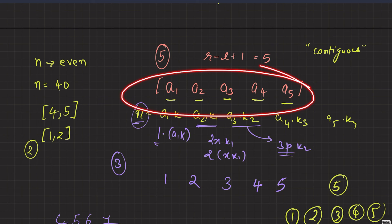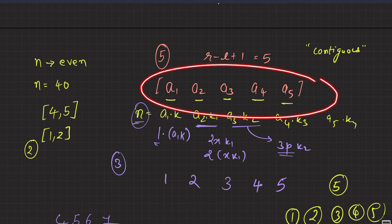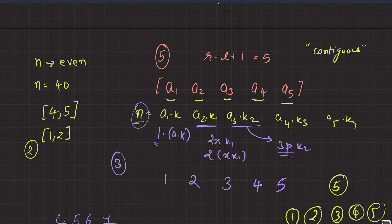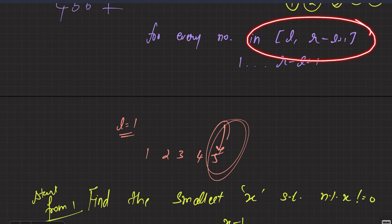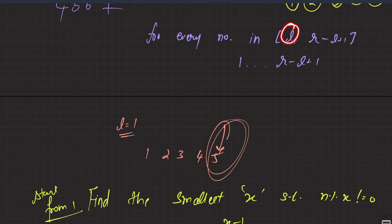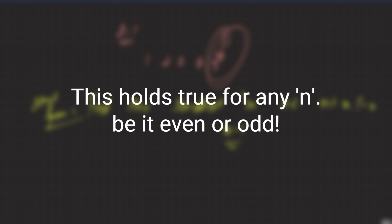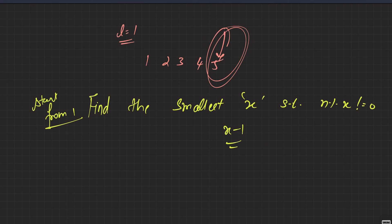To summarize: we assumed the maximum range had 5 elements. If N is a multiple of all 5 elements, then N is definitely a multiple of all elements in range 1 to 5. So any valid range from L to R also implies a valid range from 1 to R-L+1. Therefore we only need to check ranges starting from 1. The observation is a bit difficult to grasp, so rewatch if needed.